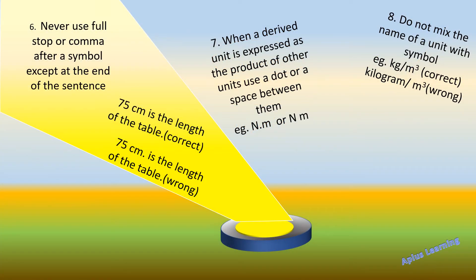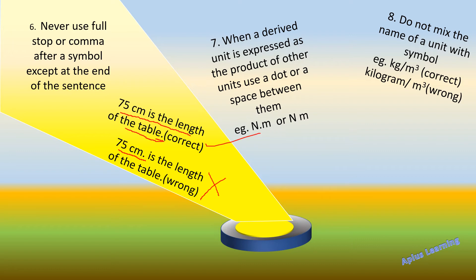Next: never use a full stop or comma after a symbol except at the end of a sentence. For example, '75 centimeter is the length of the table.' The full stop should be placed at the end of the sentence. Writing '75 cm.' with a full stop immediately after the symbol — before the sentence ends — is incorrect. The correct form puts the full stop only at the end of the sentence.